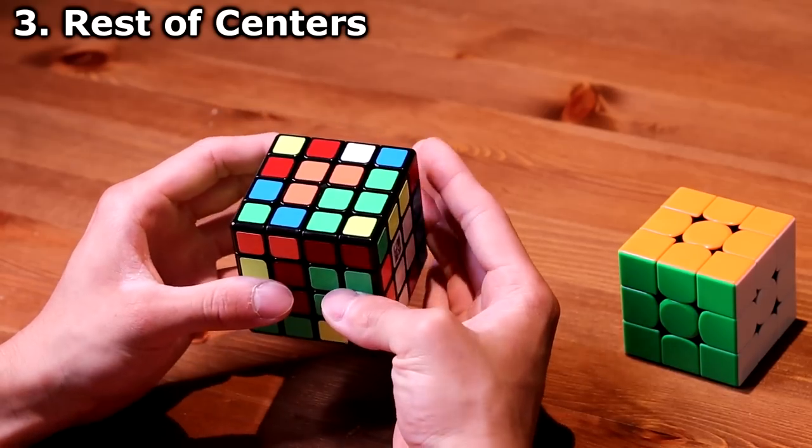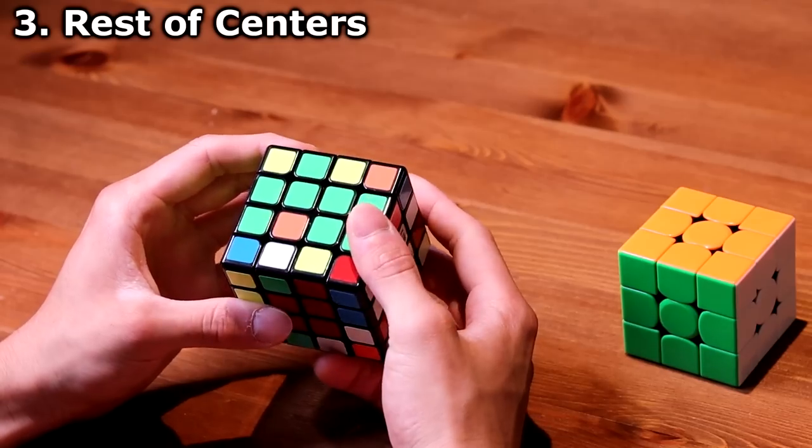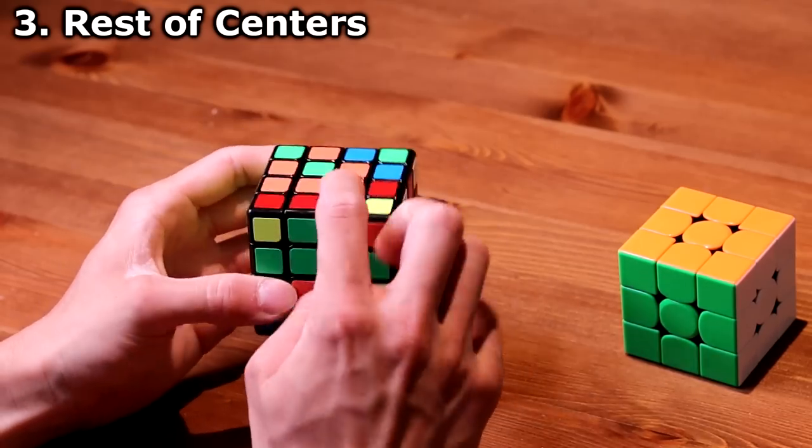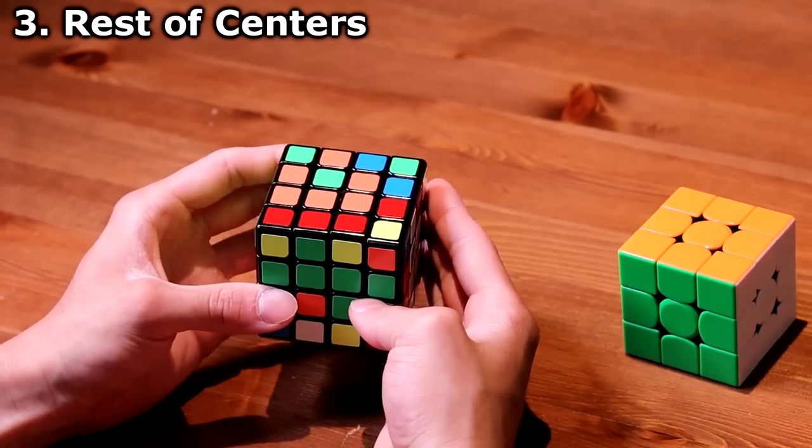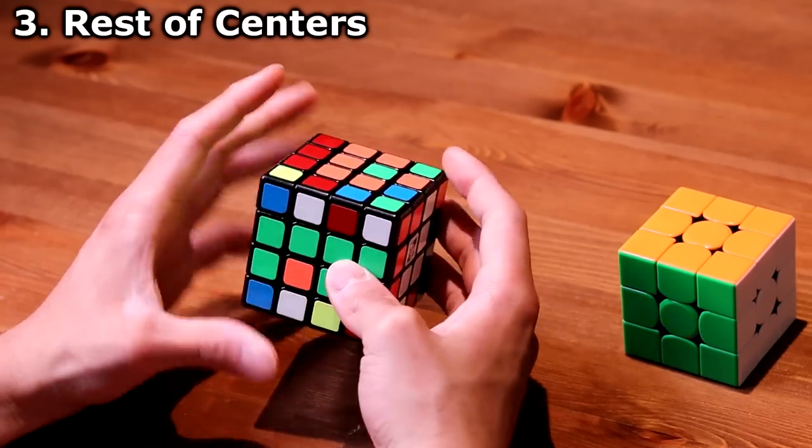bring it down to the green center, turning it twice, and then I can match it up with this lonely green piece on top. Move it to the side, and then put it back down.